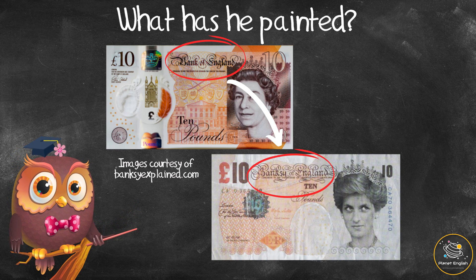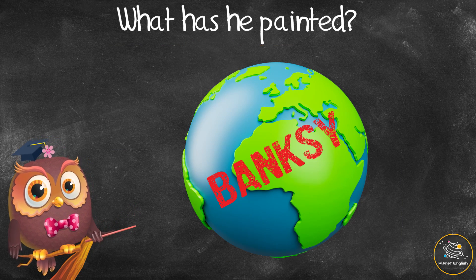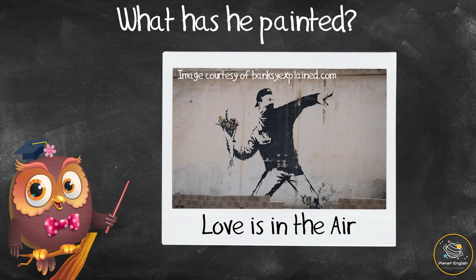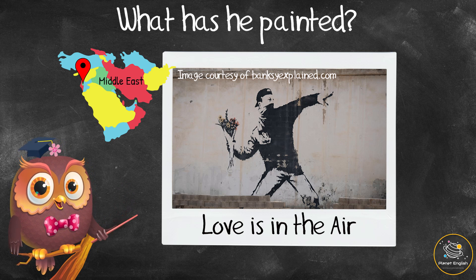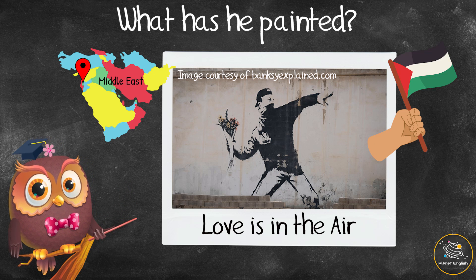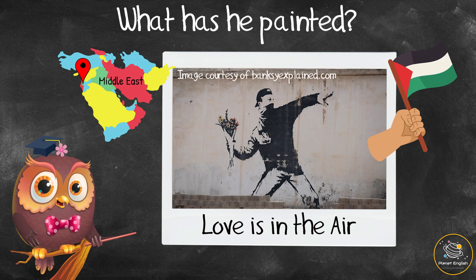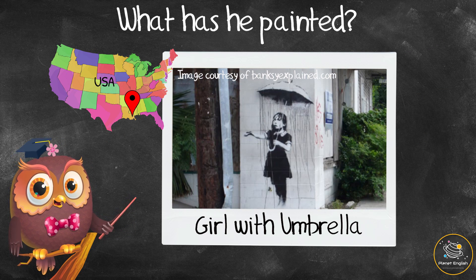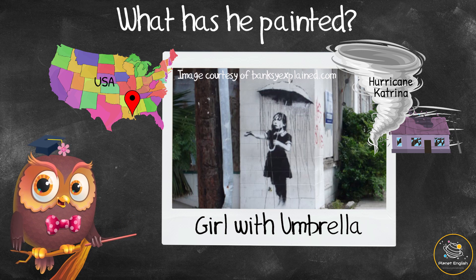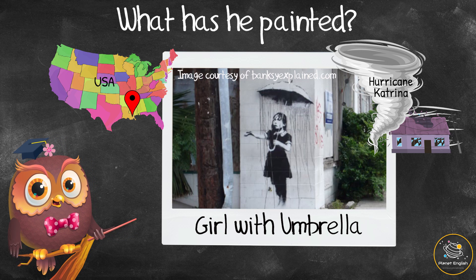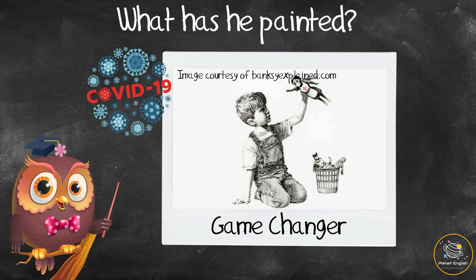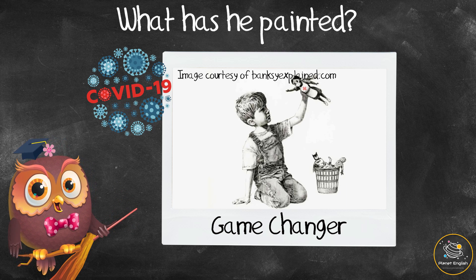He replaced the Queen's head with Princess Diana's head and also changed Bank of England to Banksy of England. Banksy's artworks now appear all over the world. In 2003, he painted Lovers in the Air in Jerusalem to show his support for Palestinian rights. He also painted Umbrella Girl in New Orleans, USA after the devastating Hurricane Katrina in 2005.